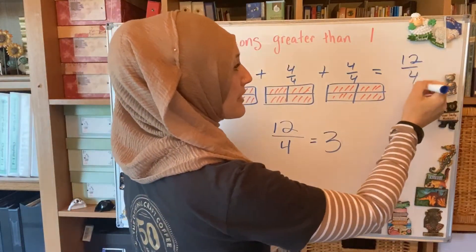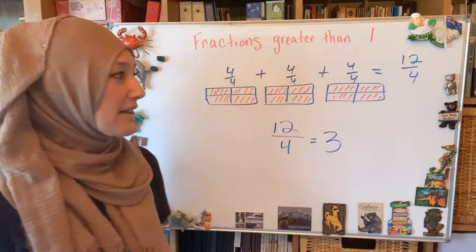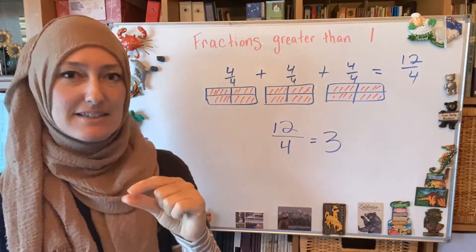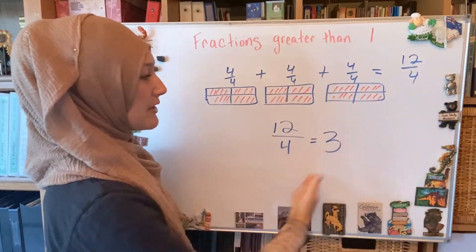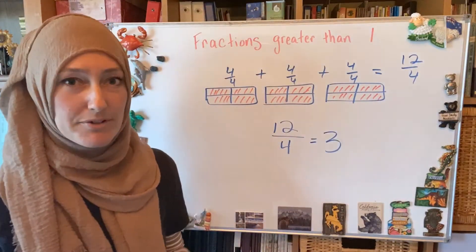I'm going to get 12 fourths. So that denominator, that bottom number, is really important to know how do you get it, and how does it stay consistent? So whether I'm adding them across or looking at a model, I need to know where does that bottom number come from.